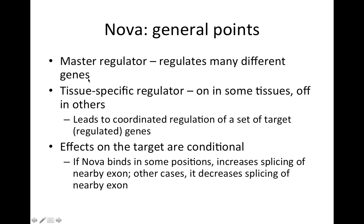The general points here: first, we can call NOVA a master regulator. A common phenomenon both at the transcriptional level and at the level of splicing is that you'll have a single protein that is a master regulator — regulates lots of genes. Here, NOVA regulates many different genes. Second, it's a tissue-specific regulator — a way to distinguish what's happening in the central nervous system from other tissues. Finally, the effects of NOVA binding on the target are conditional: sometimes it will bind and increase inclusion of an exon, and sometimes it will bind and decrease inclusion of an exon.